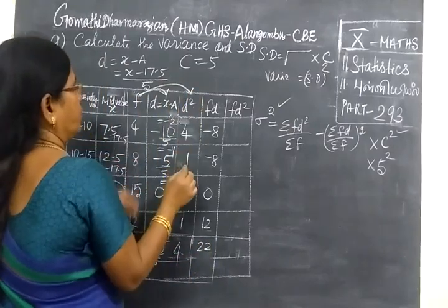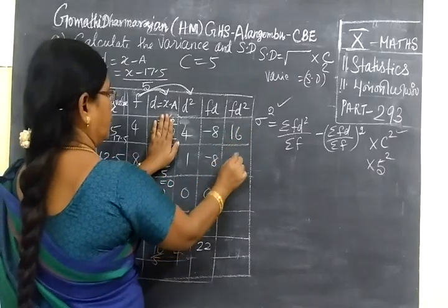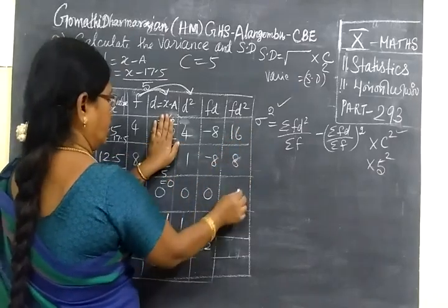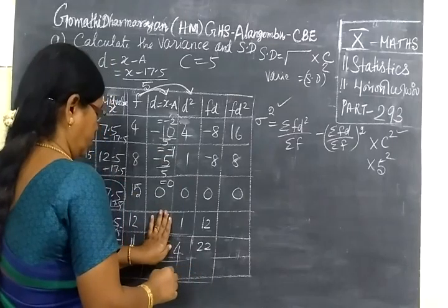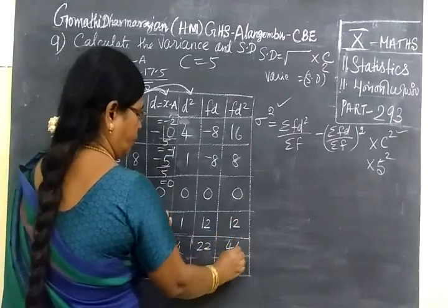Now compute Fd squared. 4 times 4 equals 16. Then 8 times 1 equals 8. 8 times 0 equals 0. 12 times 1 equals 12. 11 times 4 equals 44.